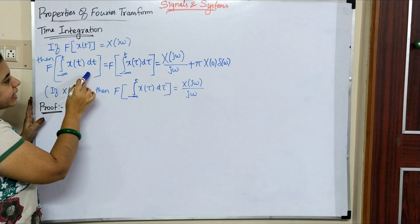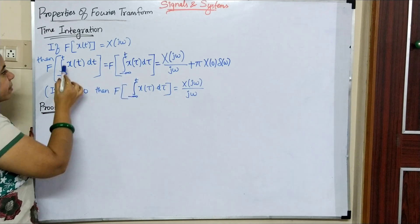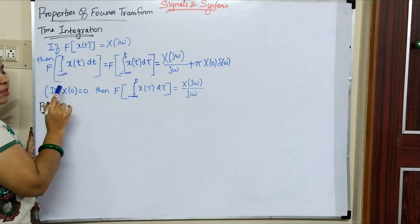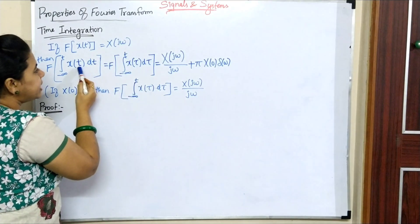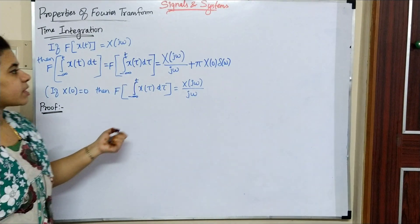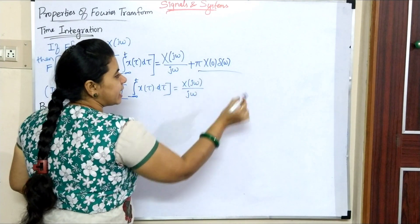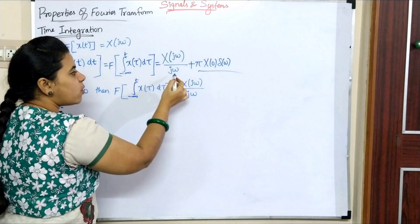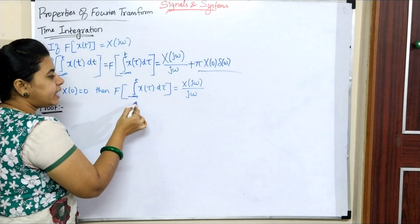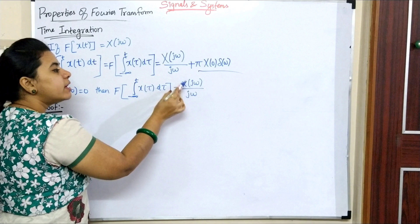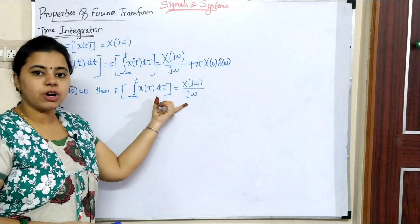Here x(t)dt and x(τ)dτ represent the same thing — we write τ because the limit is from minus infinity to t, so we substitute t with τ to avoid confusion. Also, x(0) is the value at zero. If x(0) equals zero, we only get X(jω)/jω. So the Fourier transform of the integral of x(τ)dτ equals X(jω)/jω. It is just like the opposite of differentiation.